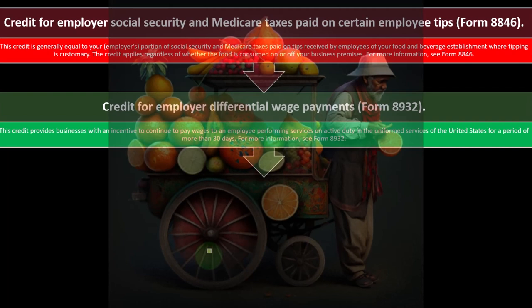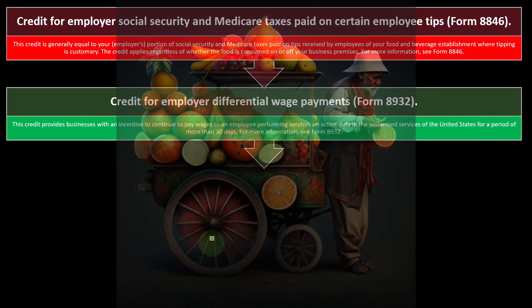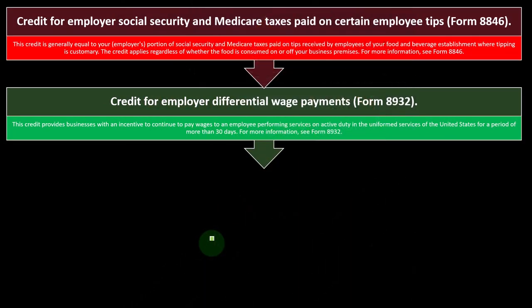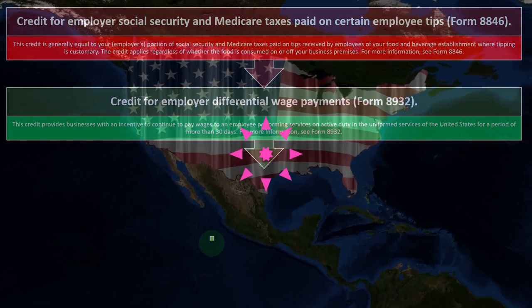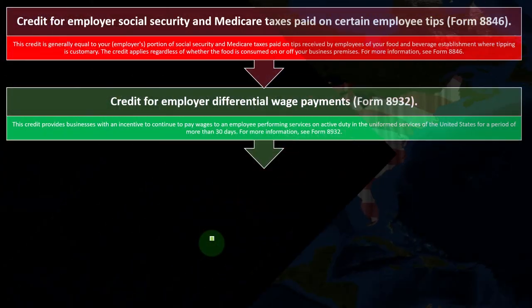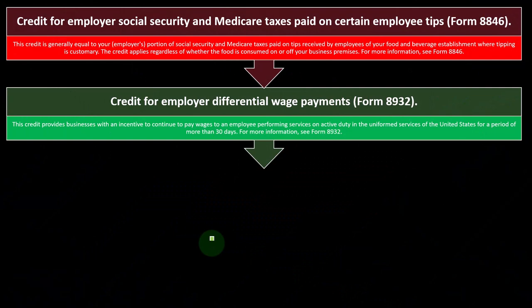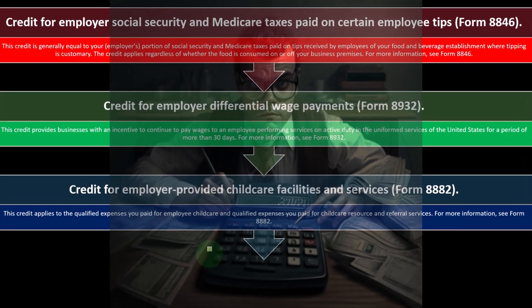Credit for Employer Differential Wage Payments is on Form 8932. This credit provides businesses with an incentive to continue to pay wages to an employee performing services on active duty in the uniform services of the United States for a period of more than 30 days. So if someone needs to serve on duty and you keep them on the payroll, that's the incentive for that particular credit.